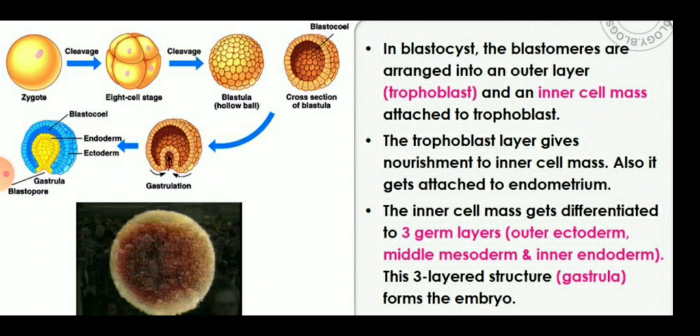You can see in this diagram a cross section of the blastula and the cross section of the gastrula. This three germ cell layer formation is called gastrulation, and it then forms the embryo.